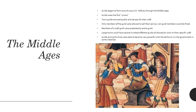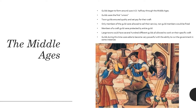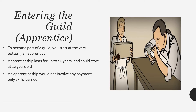Guilds were very powerful and actually had the ability to run some governments at certain times. Large towns could have several hundreds of guilds, all allowed to work on their specific craft. Members were only allowed to do their specific craft — if a tanner was also trying to do carpentry work on the side, the carpentry guild would not be very happy and would probably try to get rid of them.